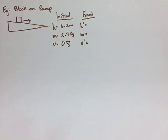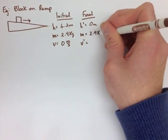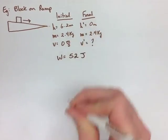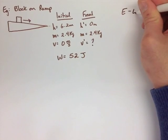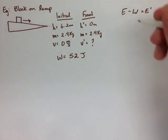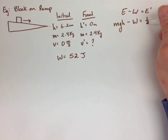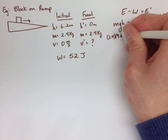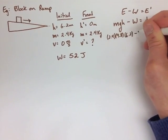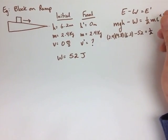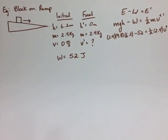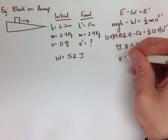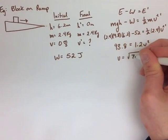When we create our energy equation, we know initially we're not going to have any kinetic energy. And finally, we're not going to have any gravitational potential. We also have work that we need to account for in this equation. So we use energy minus work equals E prime. We have MGH at the start and one half MV squared at the end. We sub in all of our values and simplify the equation. We end up getting V is equal to the square root of 78.2, and then V is equal to 8.84 meters per second.